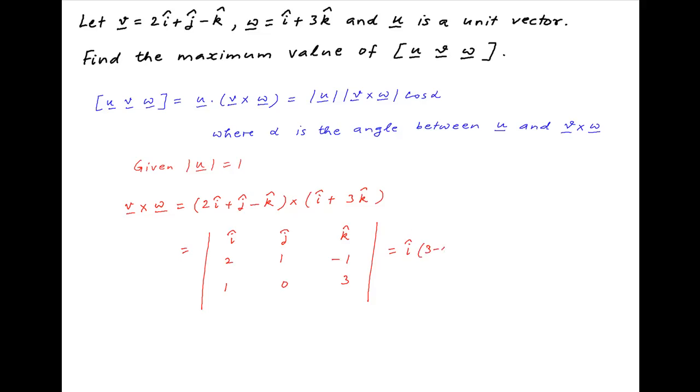This can be opened up and is equal to i times 3 minus 0 minus j times 6 plus 1 plus k times 0 minus 1, which is equal to 3i minus 7j minus k.